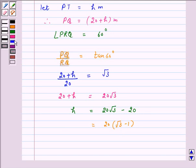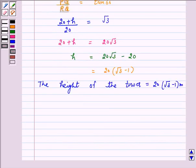Hence, the height of the tower is 20 times under root 3 minus 1 meters. Hence, the answer for the above question is 20 times under root of 3 minus 1 meters.